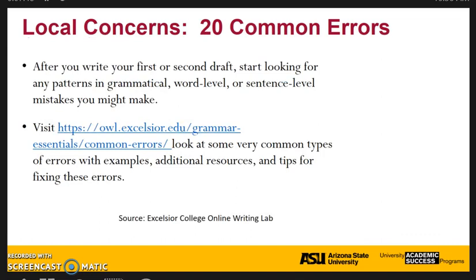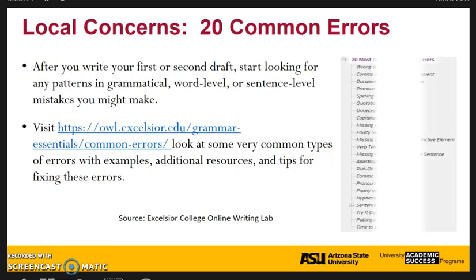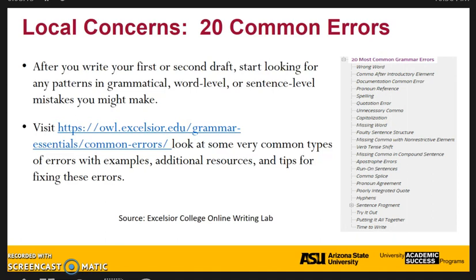After you write your first or second draft, start looking for any patterns in grammatical, word level, or sentence level mistakes that you may find yourself making. You can visit the OWL Excelsior Grammar Essentials Common Errors website to look at some very common types of errors with examples, additional resources, and tips for fixing those errors. On this slide, you can also see a list of the 20 most common grammar errors to be aware of and use when you are reviewing your writing.